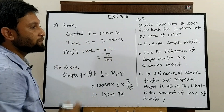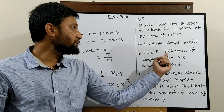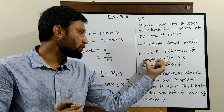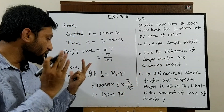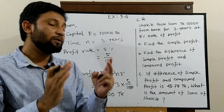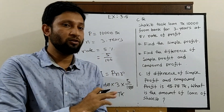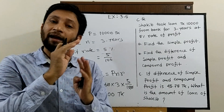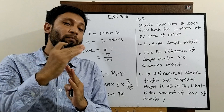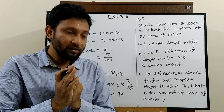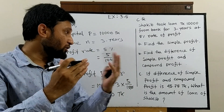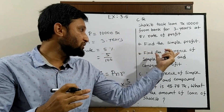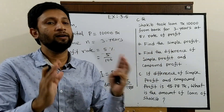Now question B. The question is: find the difference of simple profit and compound profit. From A, we already found the simple profit. Now we have to identify the compound profit. We already know the formula: compound profit = compound principal minus principal. Then we subtract to get the difference of simple profit and compound profit.